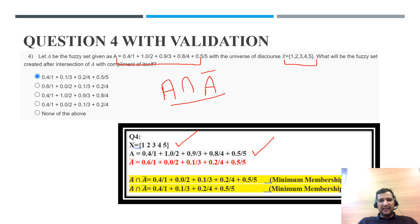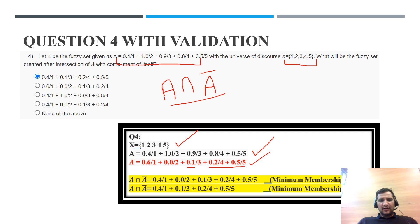For the complement: 1 minus 0.4 equals 0.6; membership value 1 gives complement 0 (since 1 minus 1 equals 0); 1 minus 0.9 equals 0.1; 1 minus 0.8 equals 0.2; and 1 minus 0.5 equals 0.5. This gives us the complete complement fuzzy set A-bar.